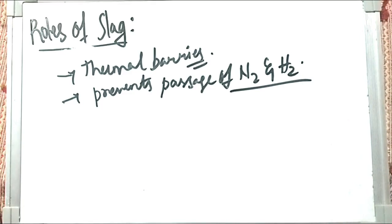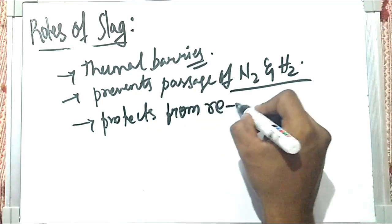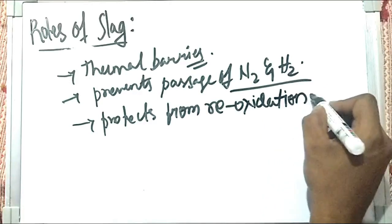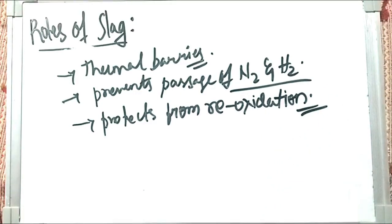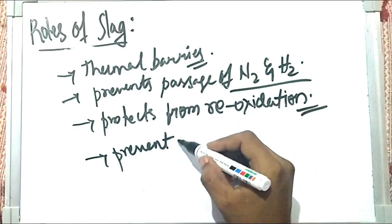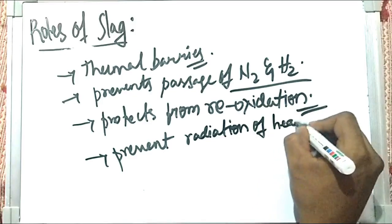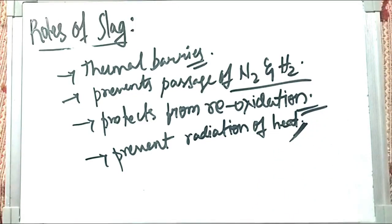The slag also protects the steel from reoxidation — since oxygen is present in the atmosphere, the slag layer prevents any extra oxygen from causing reoxidation. In EAF steel making, the slag prevents the radiation of heat, maybe to the vault or the roof of the furnace through the electrodes. These are the different important roles of slag for better steel making purposes.